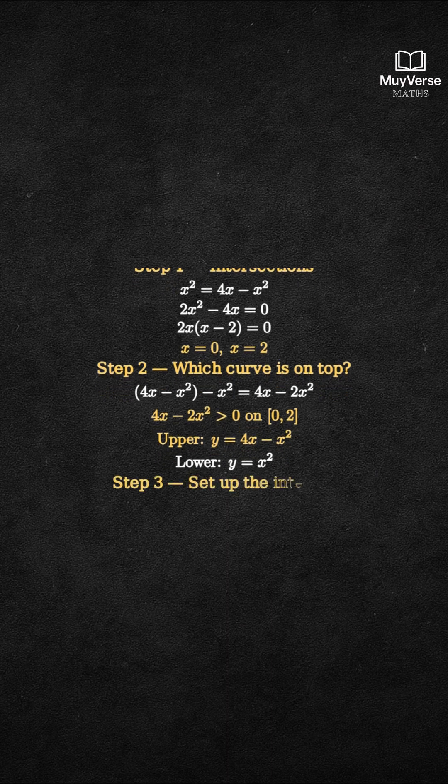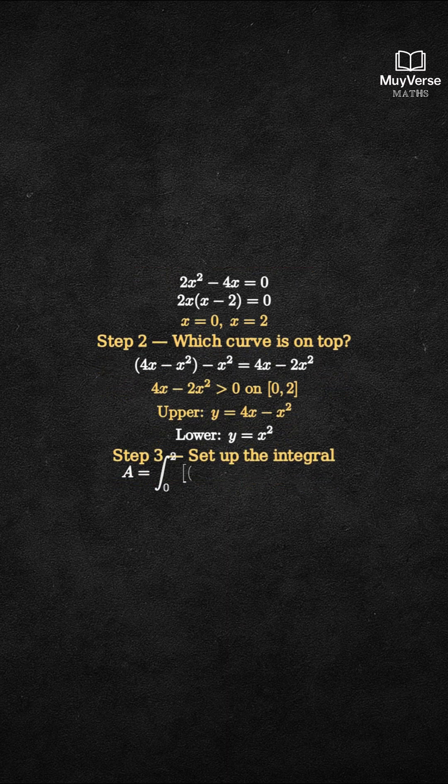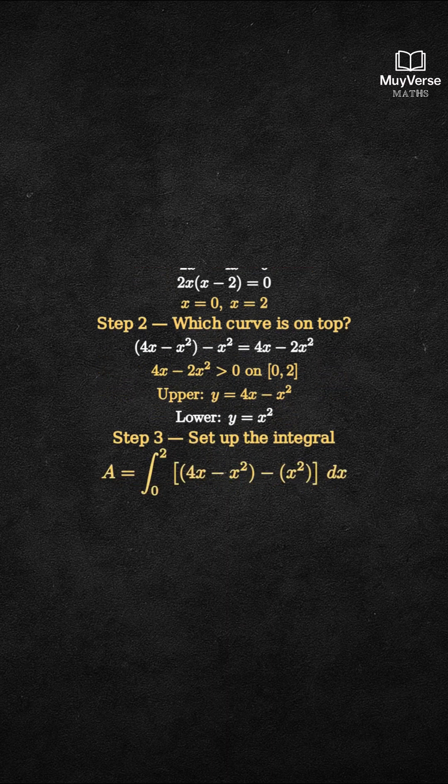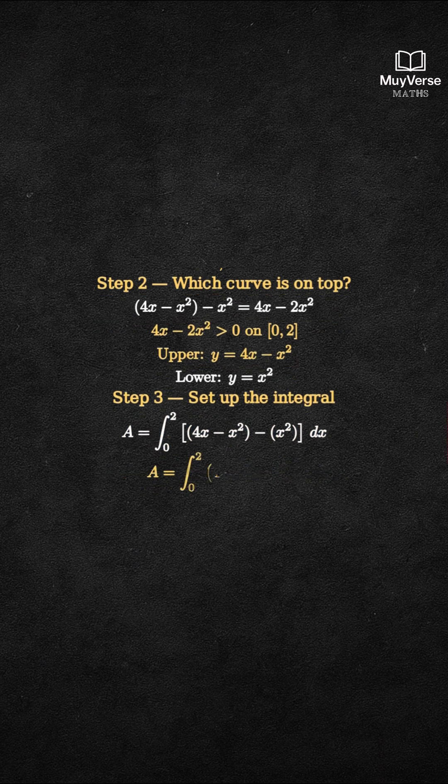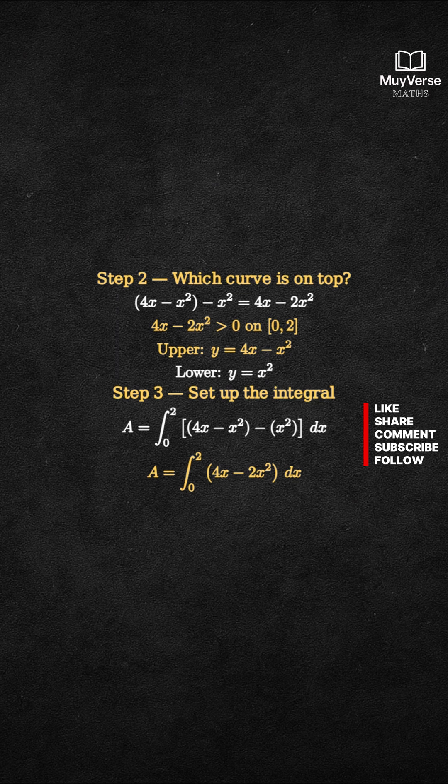Step 3, set up the area integral. Area equals the integral from 0 to 2 of upper minus lower. That is the integral from 0 to 2 of 4x minus 2x squared, dx.